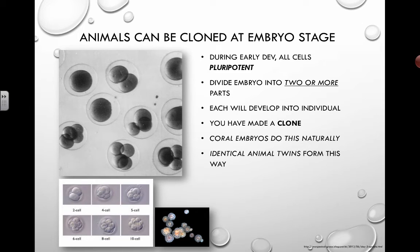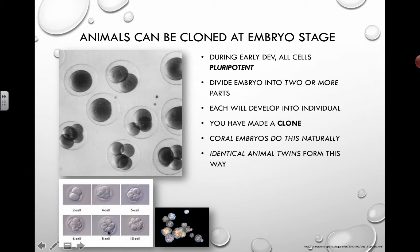Identical animal twins form this way. If you're a girl with a twin brother, those aren't identical twins — one's a boy, one's a girl. But if you're a boy with an identical twin brother, this is actually what happened: when the fertilized egg — resulting from the combining of a sperm and egg cell — got into this ball stage, that ball somehow split into two and then developed into two identical individuals.